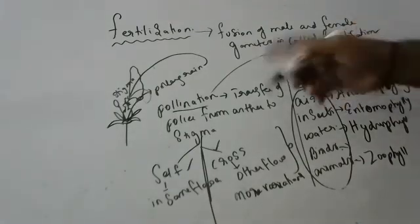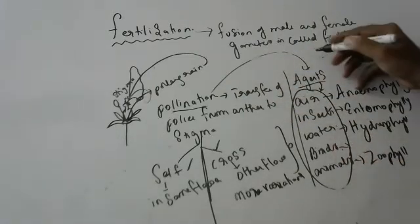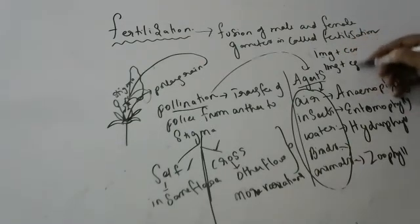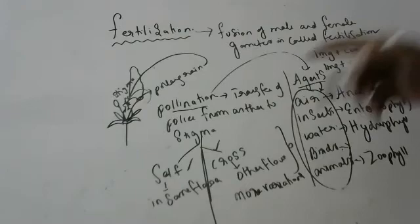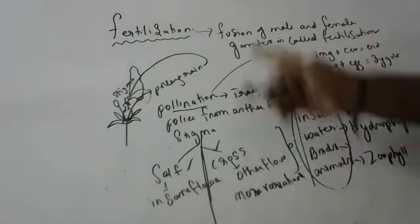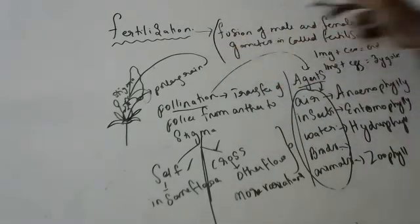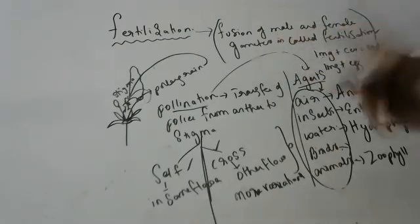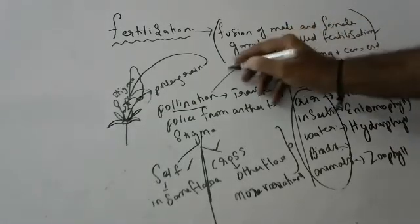In plants, inside the pollen grain there are two male gametes. One male gamete fuses with the central nucleus and another male gamete fuses with the egg — one forms endosperm and the other forms a zygote. We will discuss fertilization in depth separately. Today we are only discussing the difference between pollination and fertilization. Fertilization is the fusion of male and female gametes.